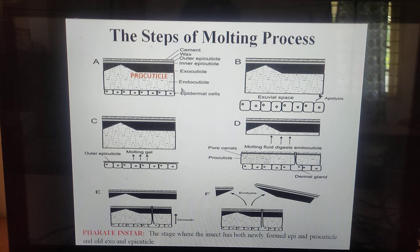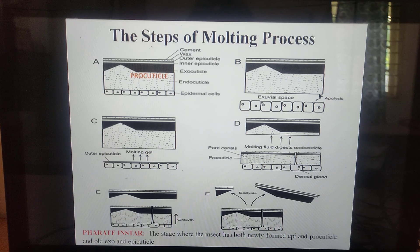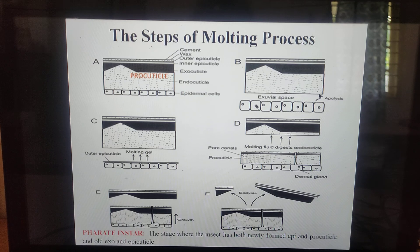The first step of molting involves behavioral changes: the larva stops feeding and becomes inactive. Then changes in the epidermis take place — the epidermal cells increase in size, activity, protein content, and enzyme levels. The cells divide mitotically, increasing in tension, which results in loosening of the cuticle.